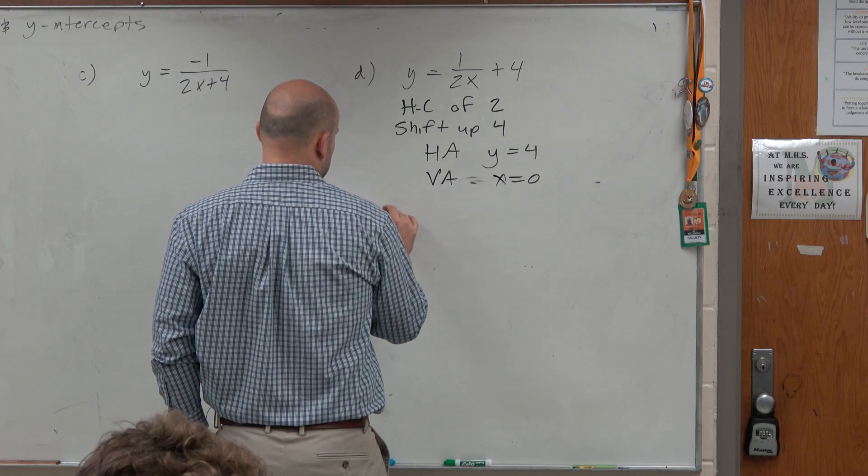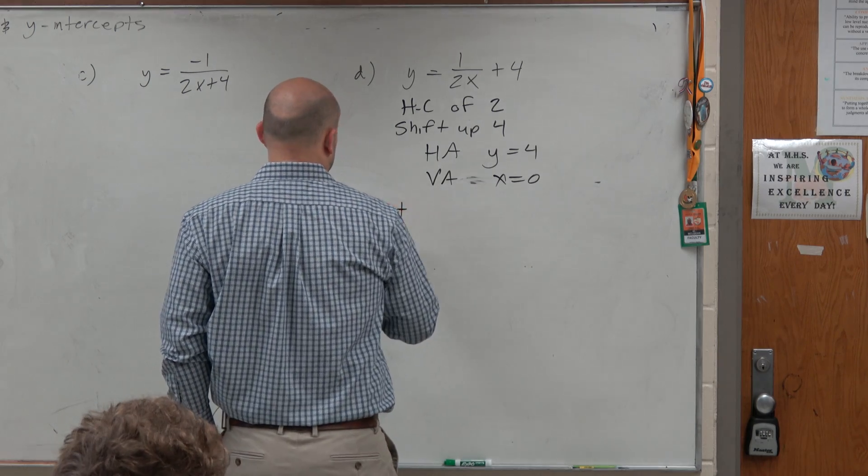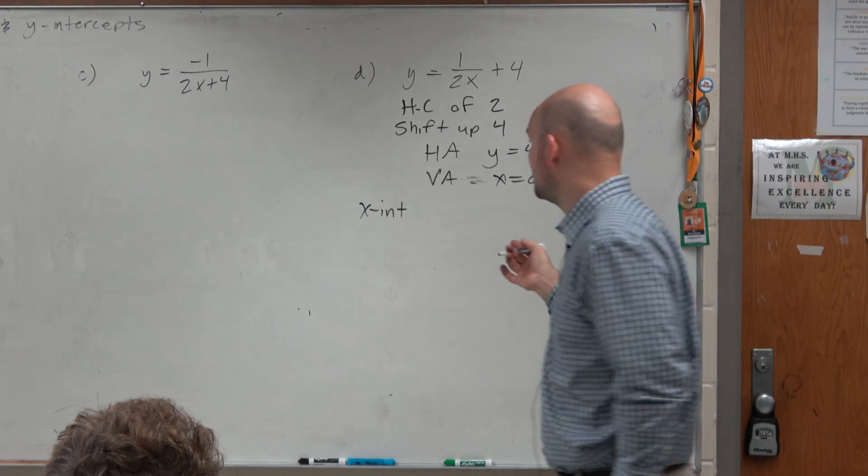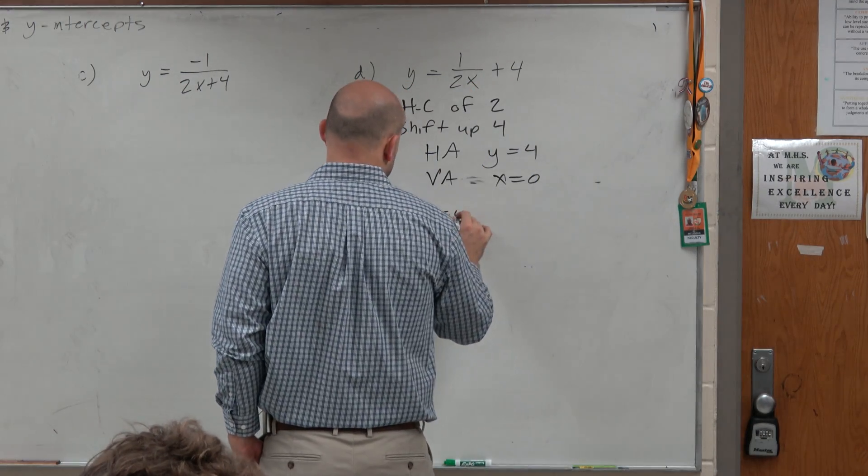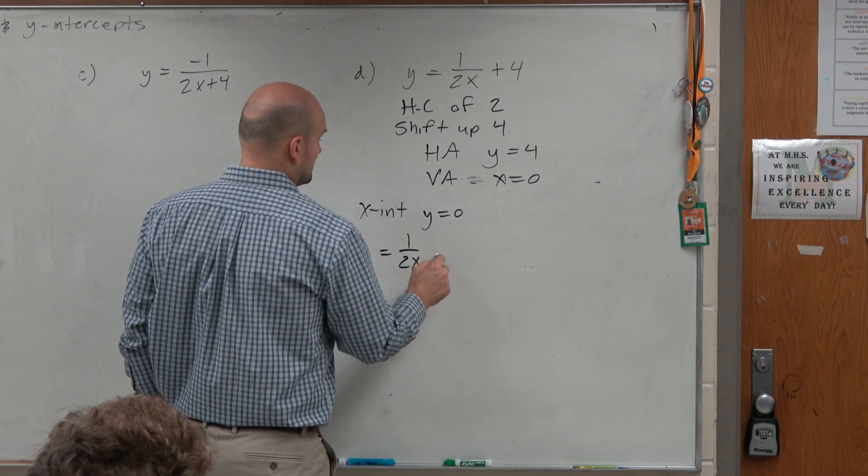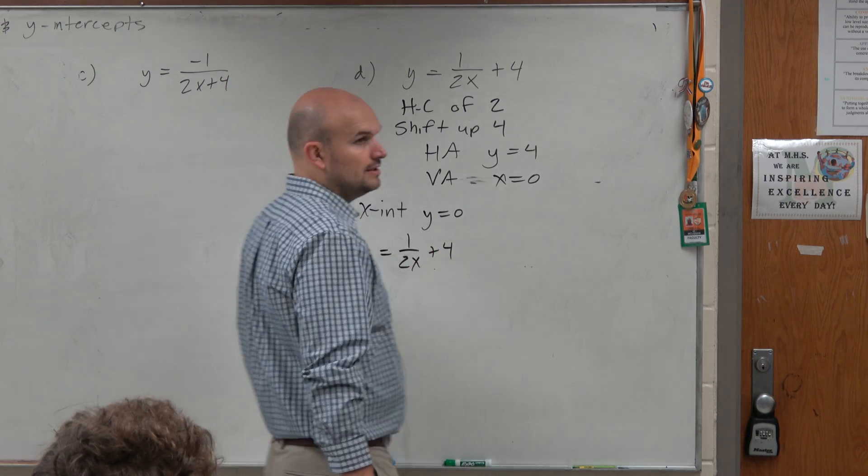Now, let's go and find our x-intercept. Since my graph is being shifted up 4, I probably have an x-intercept now. So what I'll do is x-intercept is when y is equal to 0. So I just replace 0 with y: 0 equals 1 over 2x plus 4.